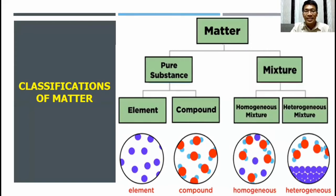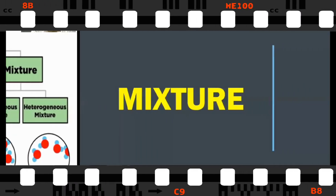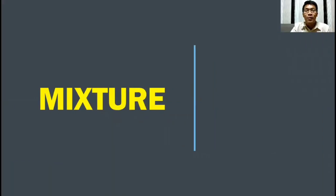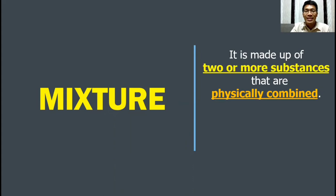As we go through with this lesson, we will learn that mixture can further be divided into homogenous mixtures and heterogeneous mixtures. But first, let us define what is mixture. Mixture is made up of two or more substances that are physically combined.